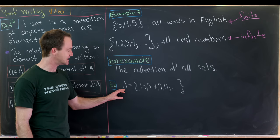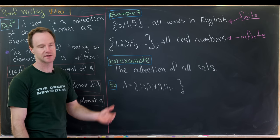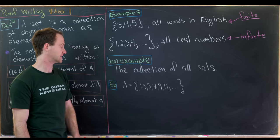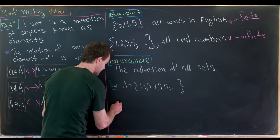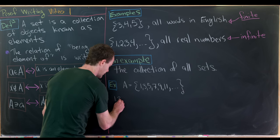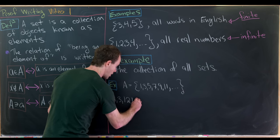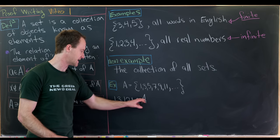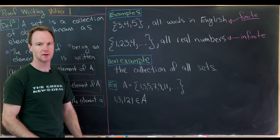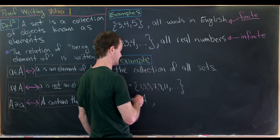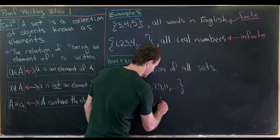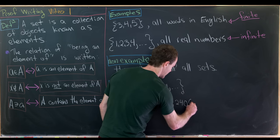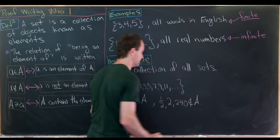Let's look at a concrete example. Let A be the set {1, 3, 5, 7, 9, 11, ...} — all odd positive integers. We can say 1, 3, and 121 are all elements of A. But 1/2 is not an element of A, 2 is not an element of A, and 240 is not an element of A.